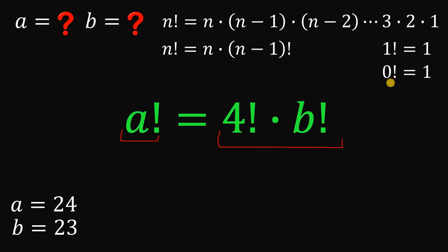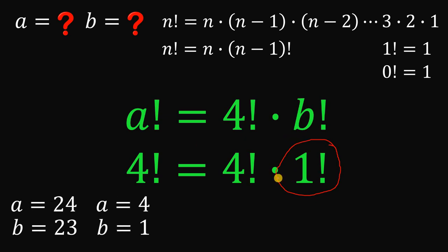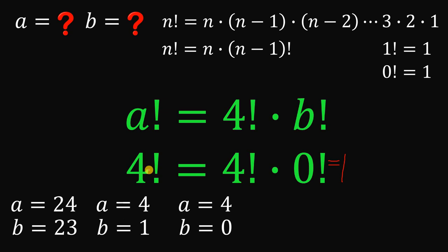Recall that 1 factorial equals 1 and 0 factorial is also equal to 1 by definition. If we replace b with 1, then 4 factorial equals 4 factorial times 1 factorial, since 1 factorial is just 1. So a can be 4 and b equals 1. Similarly, since 0 factorial equals 1, we have 1 times 4 factorial equals 4 factorial, so the other value is a equals 4 and b equals 0.